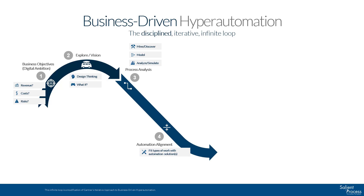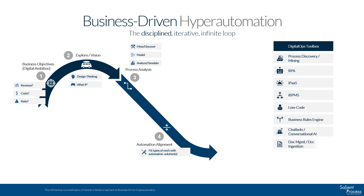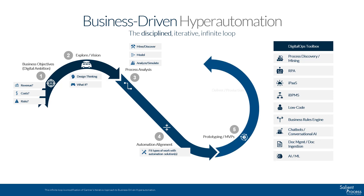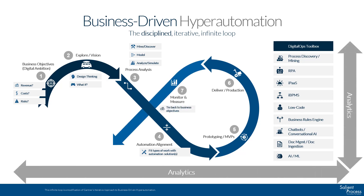The Digital Ops Toolbox has a lot of different tools you'll need to leverage to scale to hyperautomation. Automation alignment is a critical step to fit the right tools with the right work. Then we get into prototyping and delivering production solutions to satisfy your digital ambition. However, we need to monitor and measure our solutions to make sure we are meeting our digital ambition — without this step, you have no idea if you are successful. Now that you have some initial success, you can begin to scale via rigorous methodologies, which should be a part of your COE efforts.